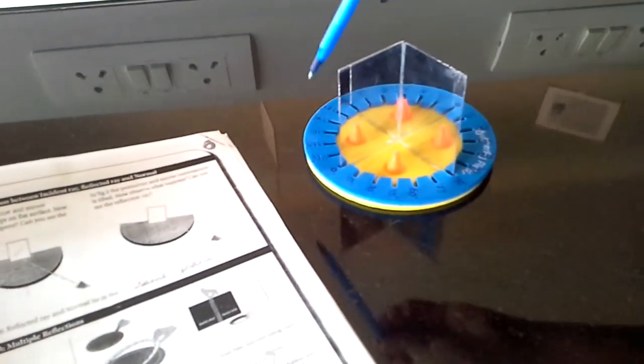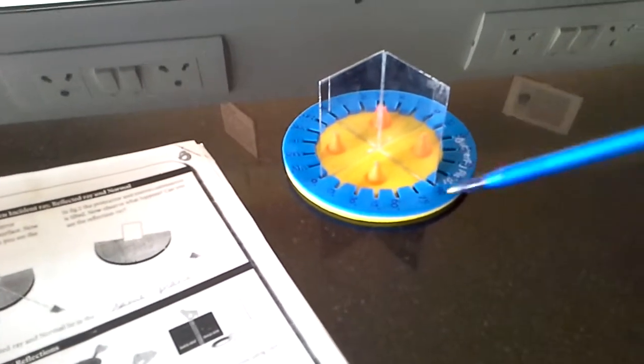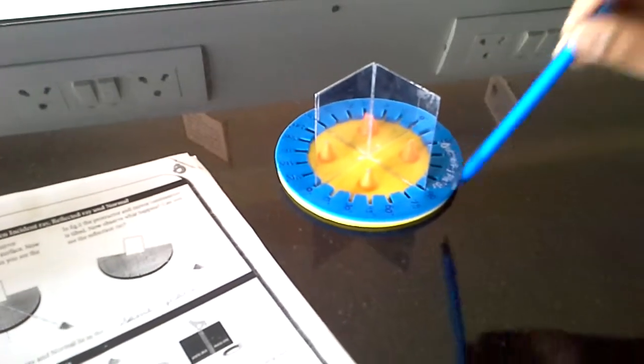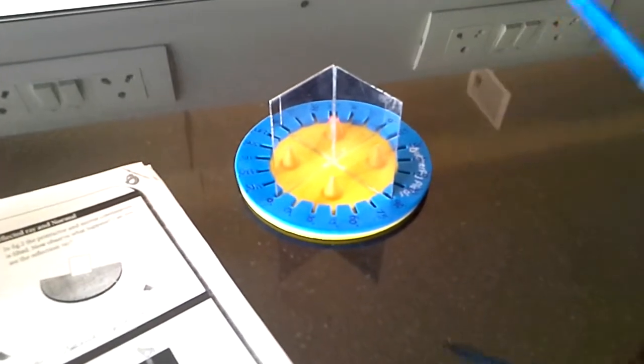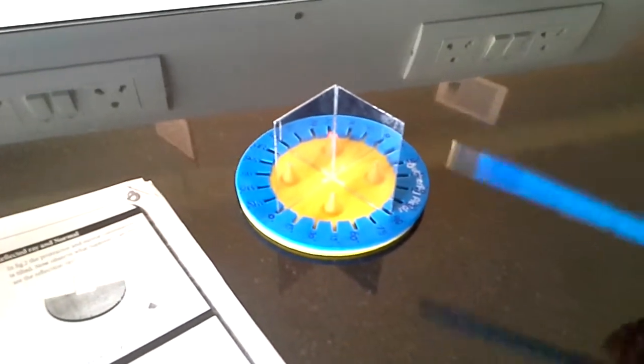So we do 360 divided by theta. So here theta is 90. So it will be 360 divided by 90. That 360 divided by 90 is 4.